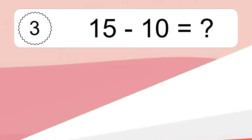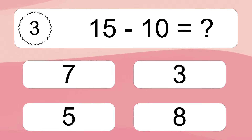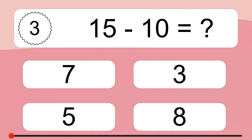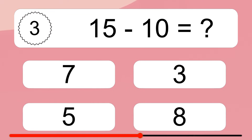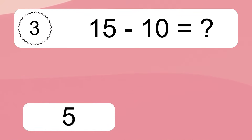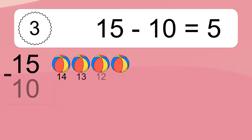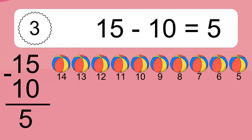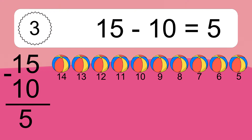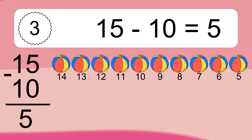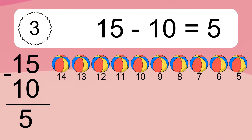15 minus 10 equals what? 15 minus 10 equals 5. Let's count it: 14, 13, 12, 11, 10, 9, 8, 7, 6, 5.